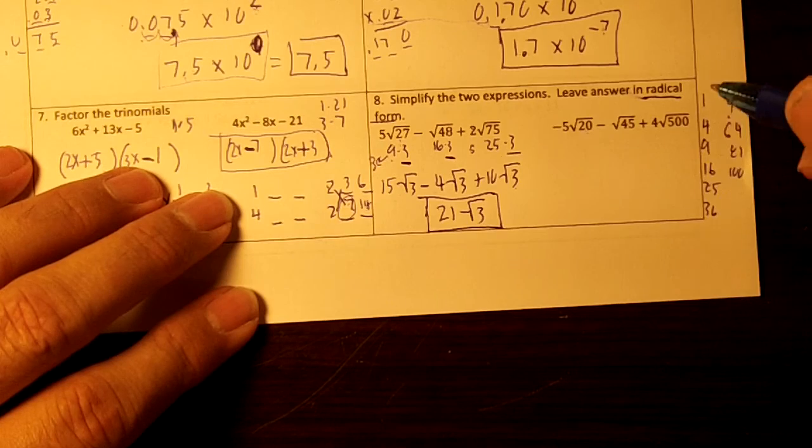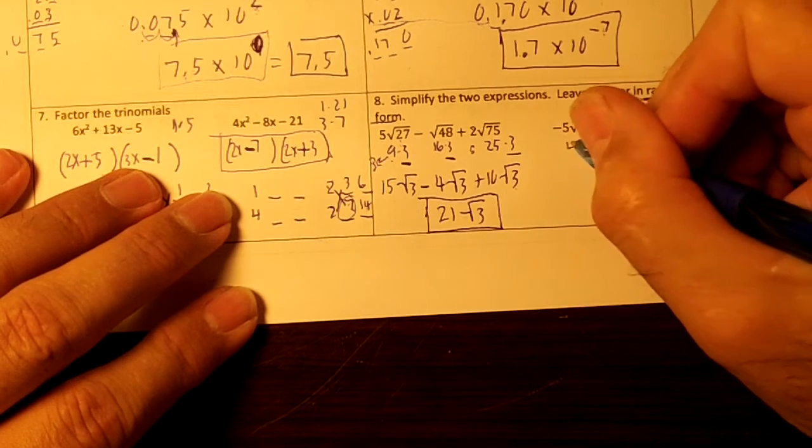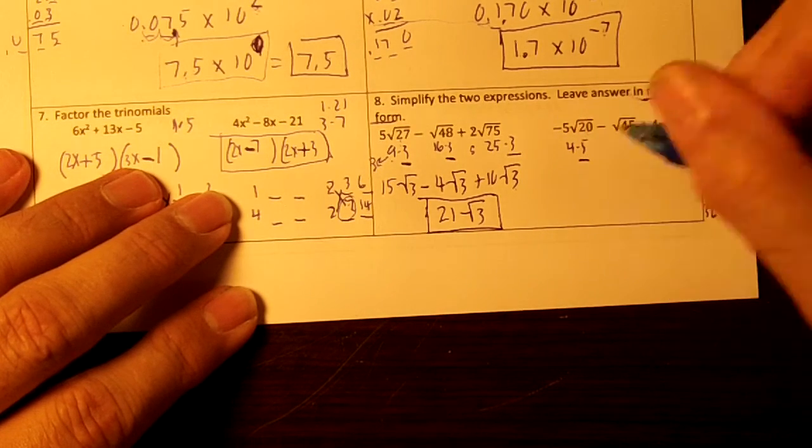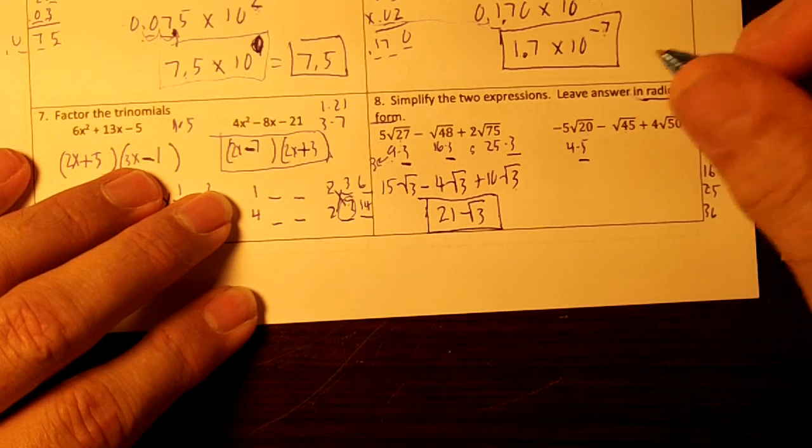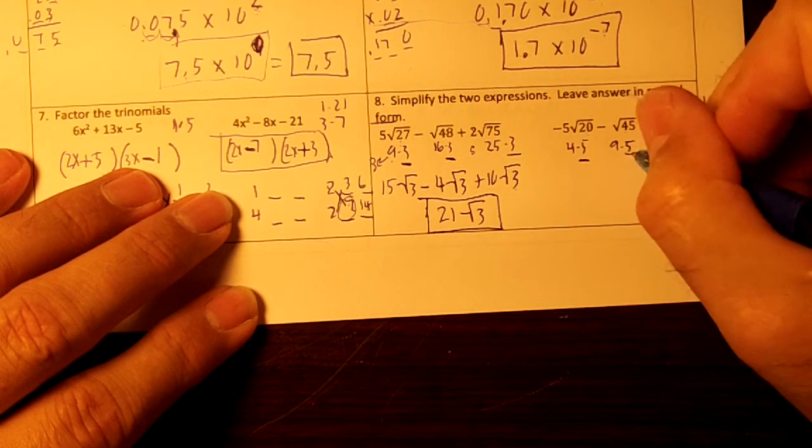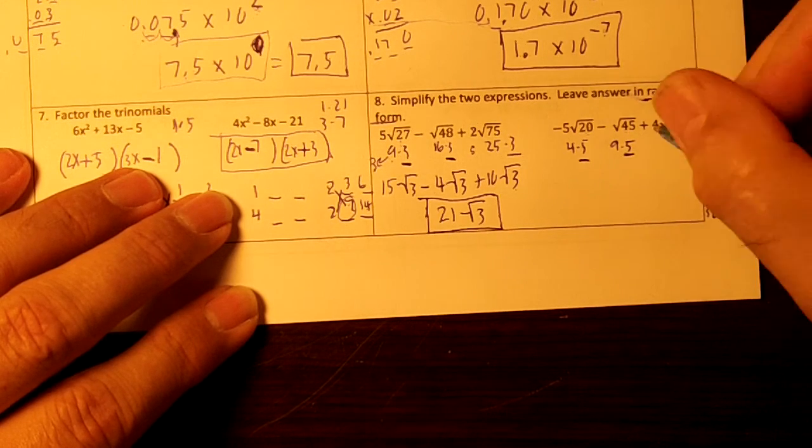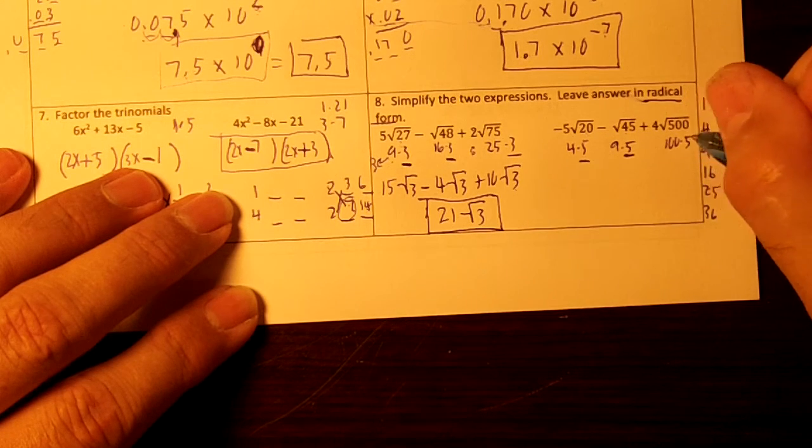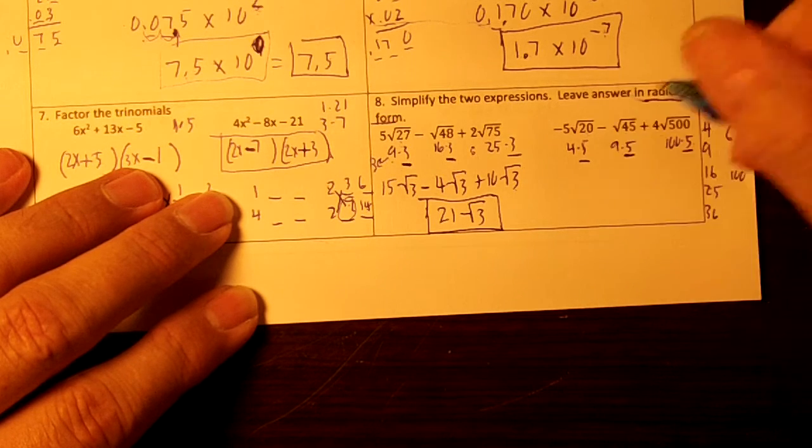Okay, over here, we have 20. 4 works. So we're going to put 4 times 5. Underline the 5. Let's do 45. That's going to be 9 times 5. And 500 is going to be 100 times 5, isn't it? Notice that I'm going to have a square root of 5 on each one.